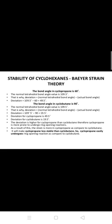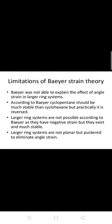Baeyer's strain theory calculations: The bond angle in cyclopropane is 60°. The normal tetrahedral bond angle is 109.5°. Therefore, deviation = normal tetrahedral bond angle − actual bond angle = 109.5° − 49.5°. The bond angle in cyclobutane is 90°, giving a smaller deviation.